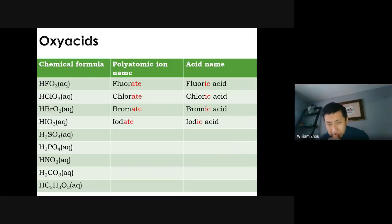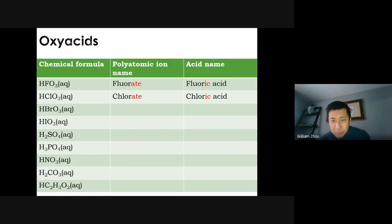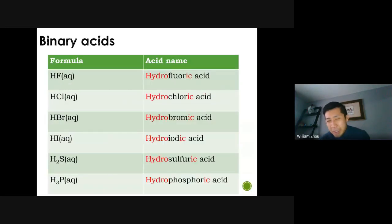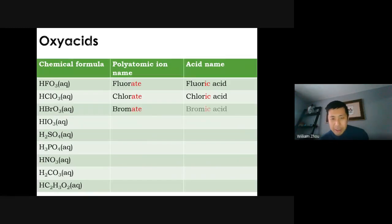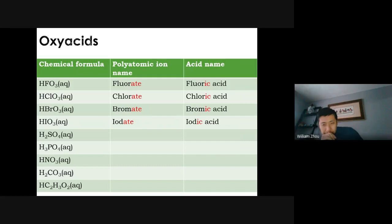You might be thinking: didn't we have a fluoric acid and chloric acid before, from the binary acids section? Yes, but look — binary acids without oxygen all start with 'hydro': hydrochloric acid, hydrobromic acid. Whereas oxy acids don't have the 'hydro.' That's the difference. There is a difference between hydrochloric acid and just chloric acid. Please make sure you don't get them mixed up.